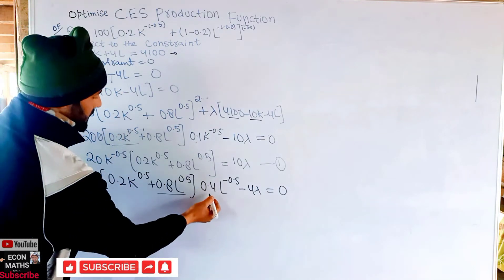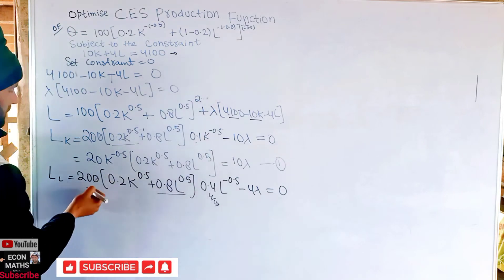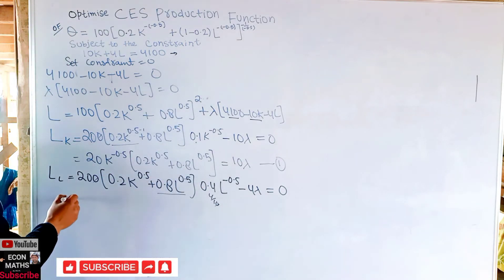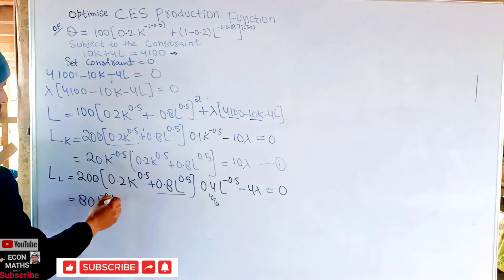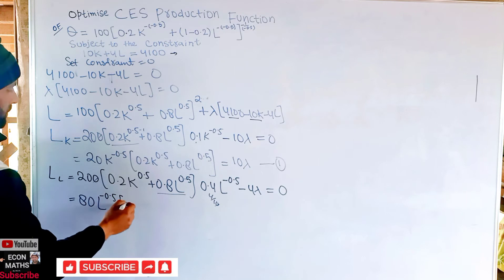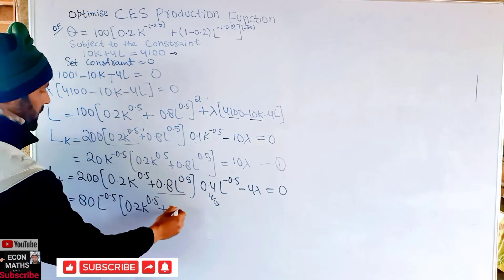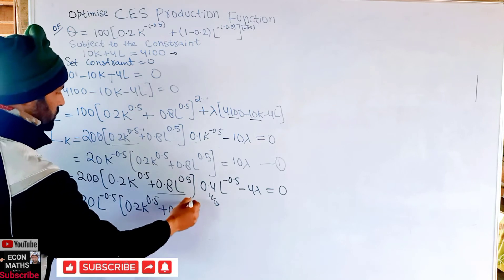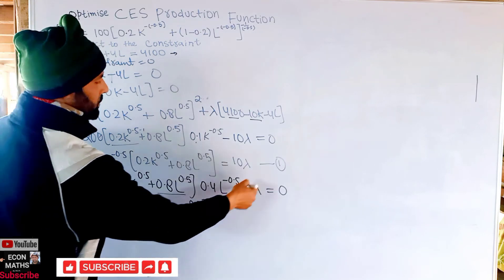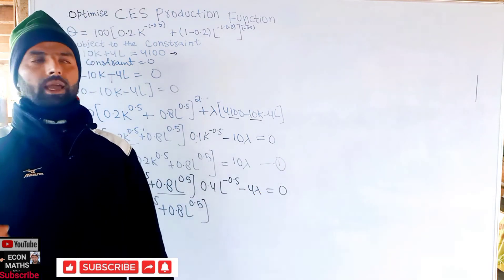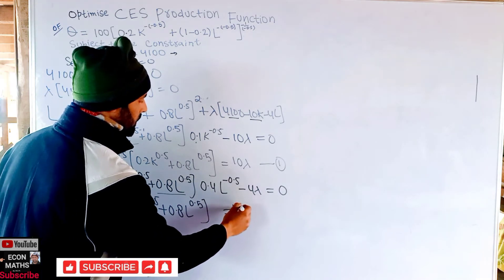Simplifying: 200 × 0.4 = 80, so we get 80 L^(−0.5) × (0.2 K^(0.5) + 0.8 L^(0.5)) − 4λ = 0. Transposing, this becomes 80 L^(−0.5) × (0.2 K^(0.5) + 0.8 L^(0.5)) = 4λ. Let this be Equation 2.